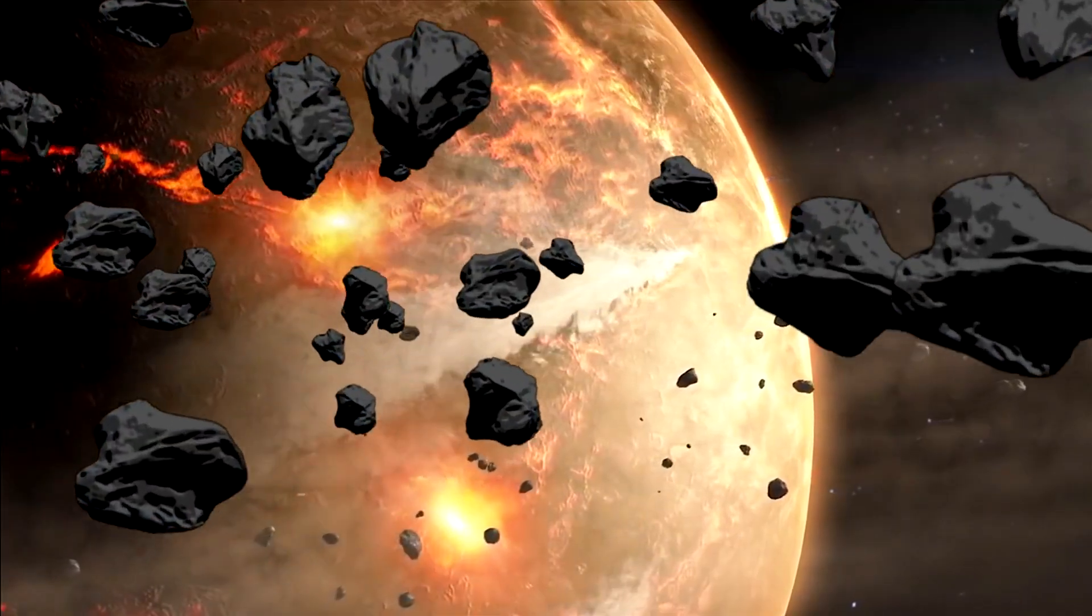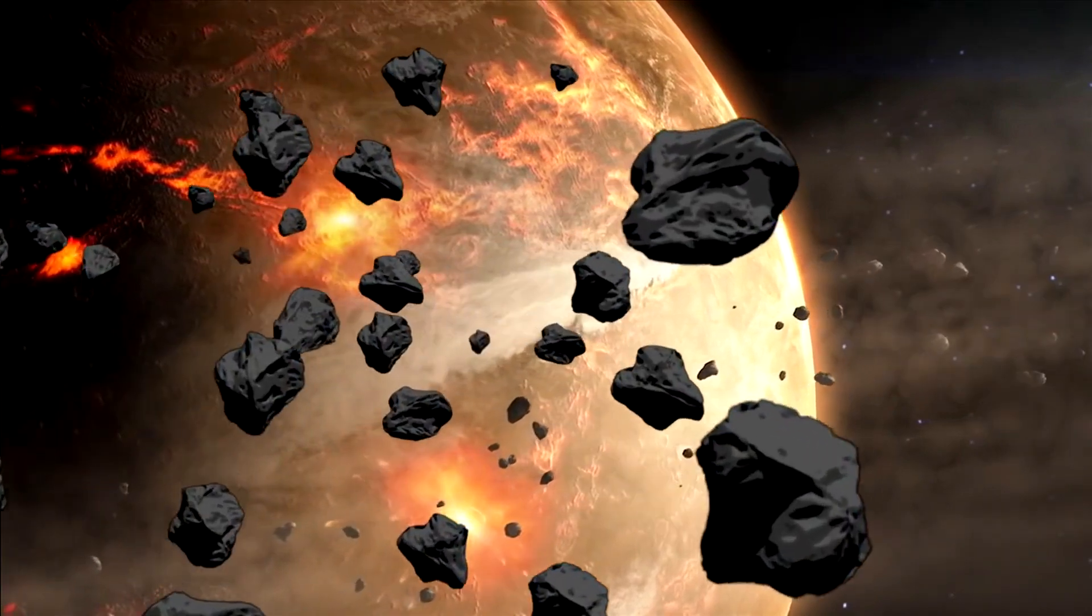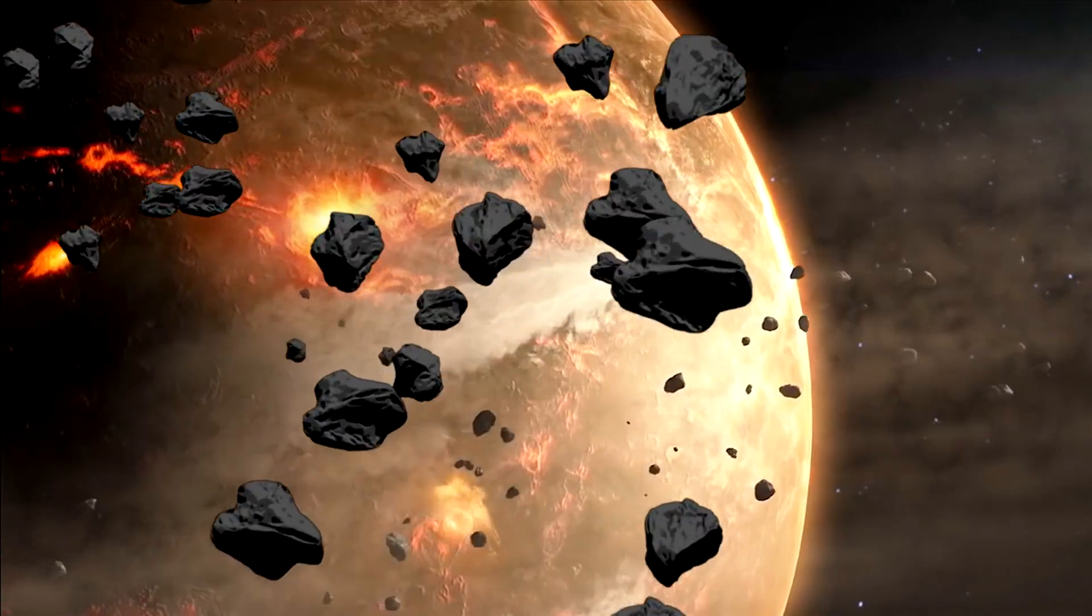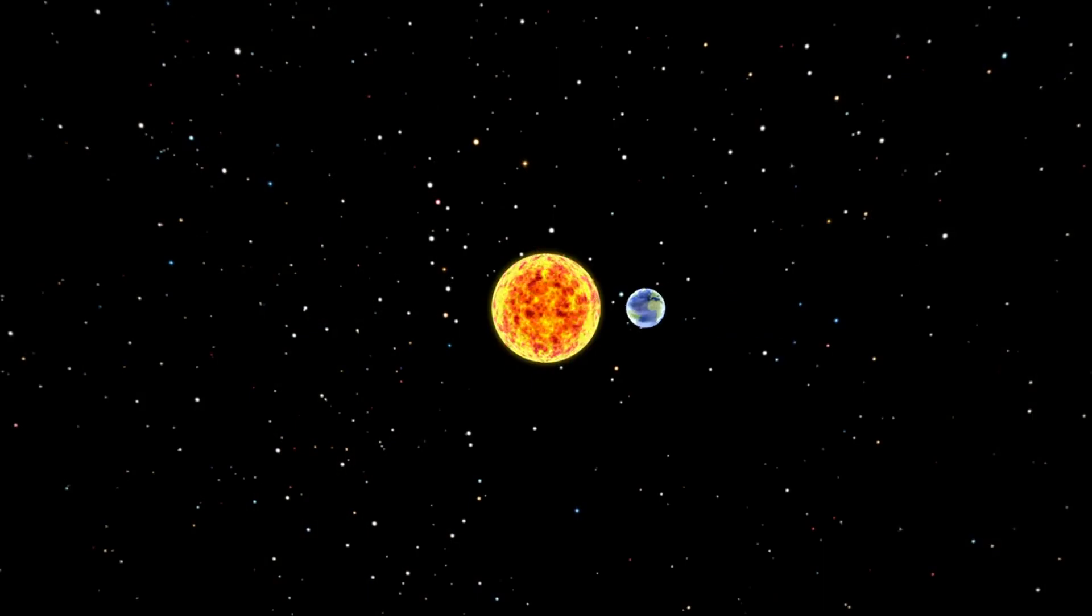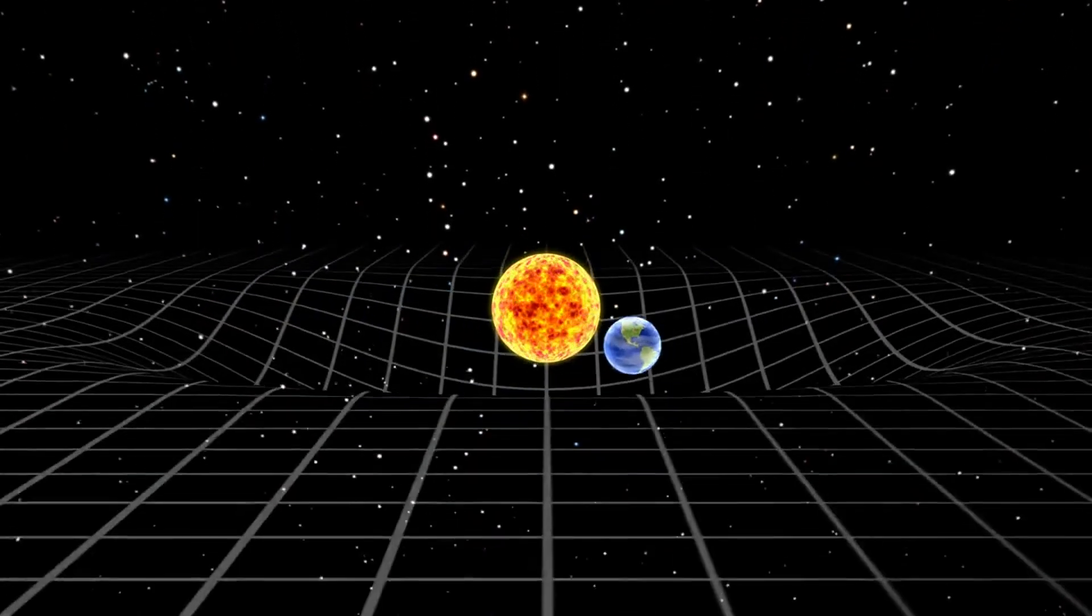The fusion of iron does not release energy, marking a critical point where the star can no longer support itself against gravitational collapse. This collapse can result in either a supernova explosion or the formation of a black hole.